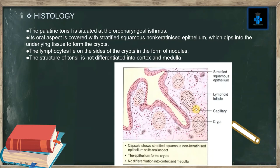Histology: The palatine tonsil is situated at the oropharyngeal isthmus. Its oral aspect is covered with stratified squamous non-keratinized epithelium, which dips into the underlying tissue to form crypts. The lymphocytes lie on either side of the crypts in the form of nodules. The structure of the tonsil is not differentiated into cortex and medulla, which is a useful point of identification.